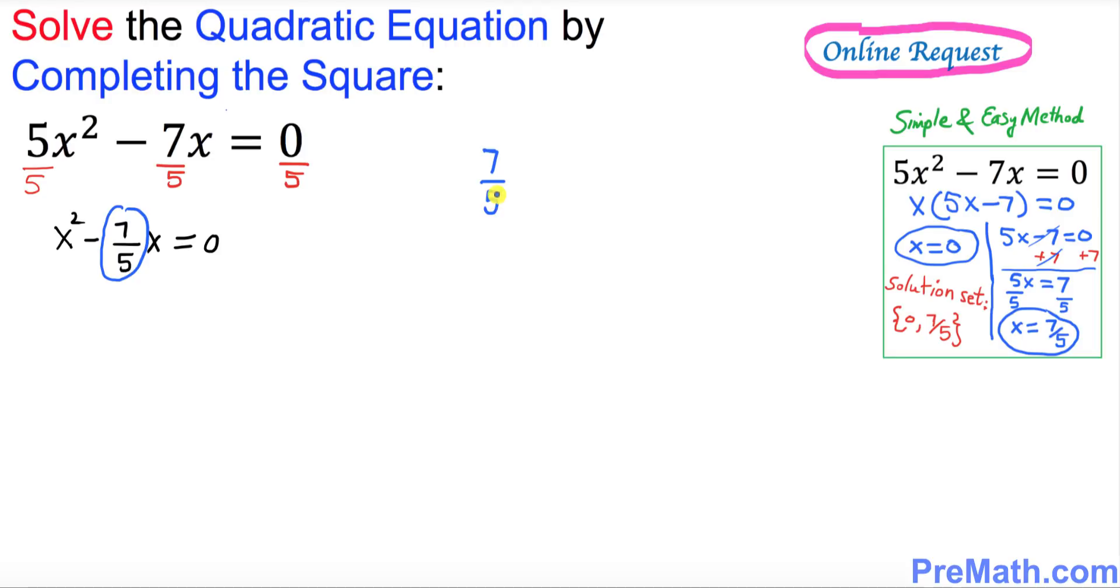Now I want you to divide this one by 2. Dividing by 2 is same as multiplying by 1/2, so that is gonna give us 7/10. Whatever this number we got, you must square it, so we got (7/10)².